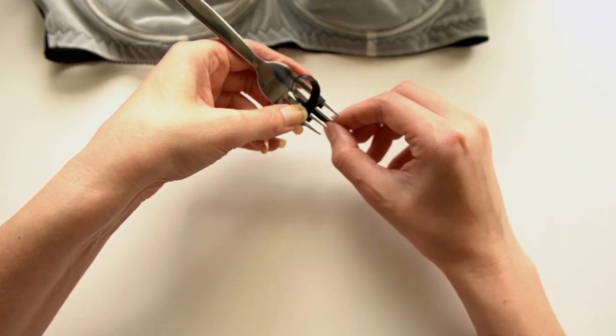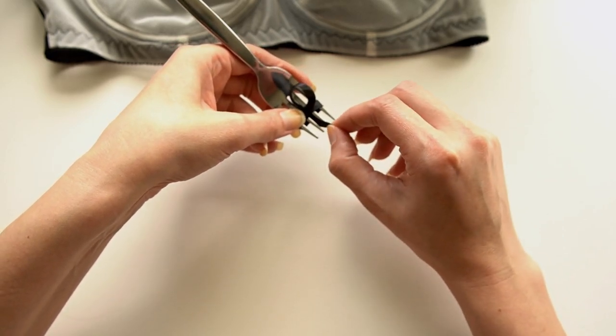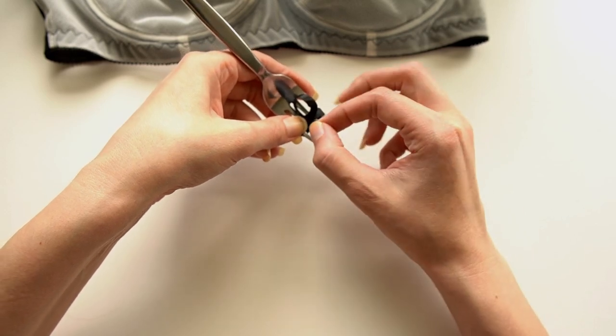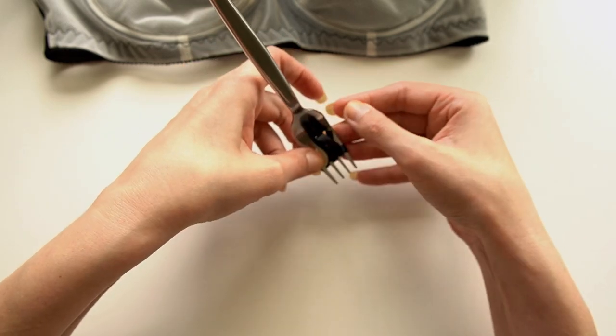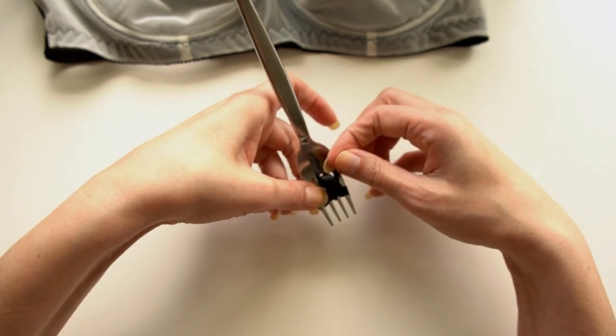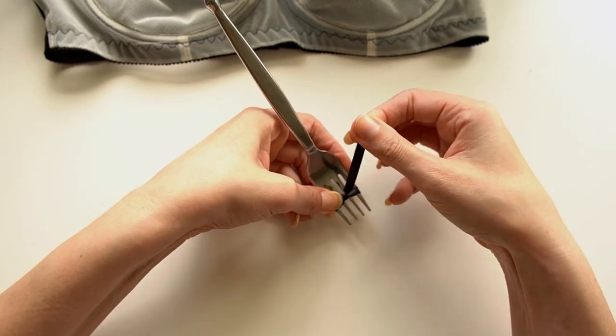Make sure you don't pull it all the way through. You want to leave yourself a little loop, and you come underneath and back up around through the middle tine on the bottom, and then you just want to pull the ribbon through that loop that we left. And now you can pull it tight.